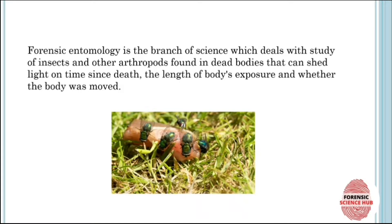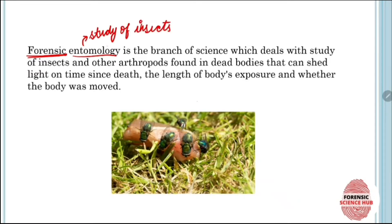Now let's get started. The definition: forensic entomology is a branch of science which deals with the study of insects and other arthropods found in dead bodies, that can shed light on the time since death, the length of the body's exposure, and whether the body was moved. Forensic simply means the application of different scientific methods to solve a criminal case, and entomology is the study of insects.